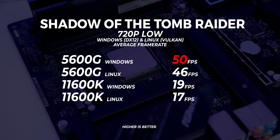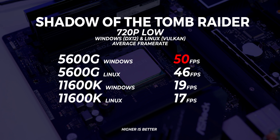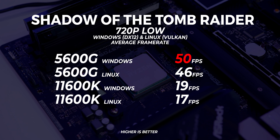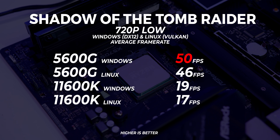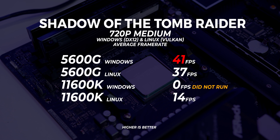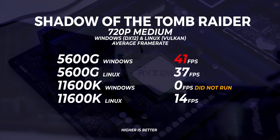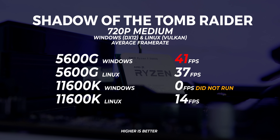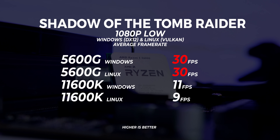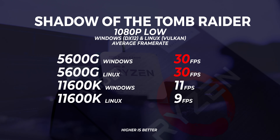In Shadow of the Tomb Raider at 720p low, with Windows and the 5600G we're getting the best performance out of both Windows and Linux — around 50 frames per second, not too bad. At 720p medium, the 11600K does not run this benchmark at all; we had lots of problems and couldn't do it on many motherboards. At 1080p low in Shadow of the Tomb Raider, both Windows and Linux show exactly the same performance.